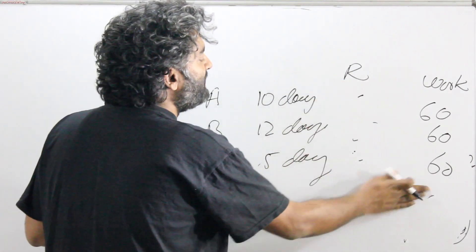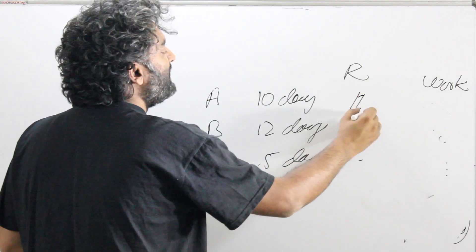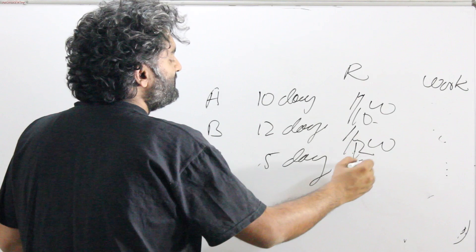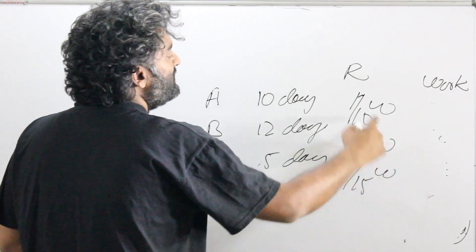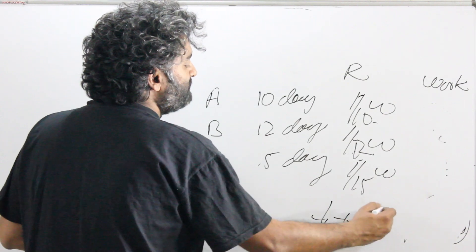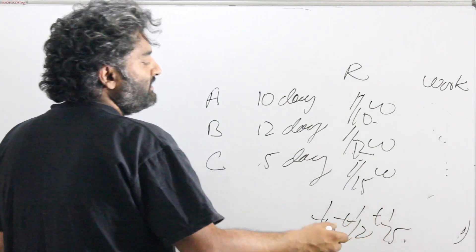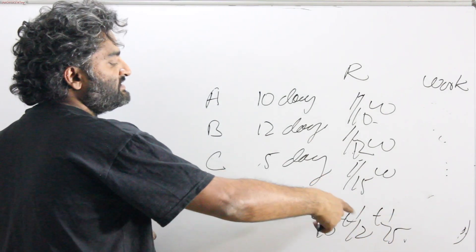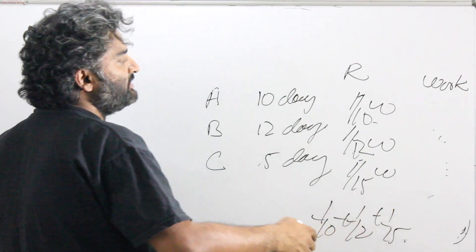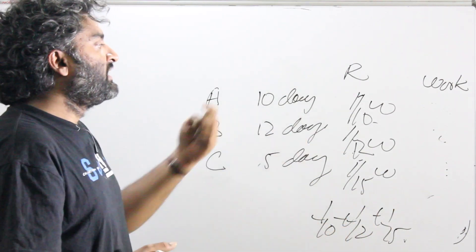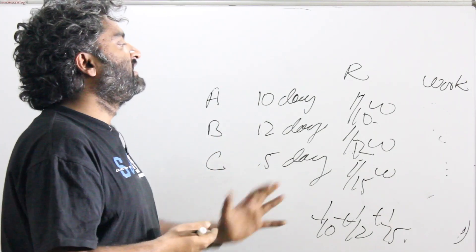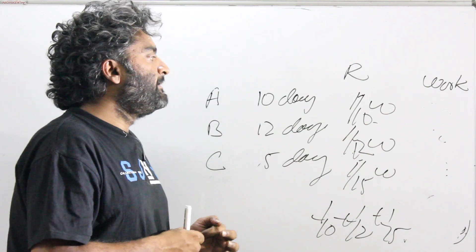If you were doing it by fractions, this would be 1 by 10 of work, 1 by 12 of work, and 1 by 15 of work. Combined rate would have been 1 by 10 plus 1 by 12 plus 1 by 15. LCM in the denominator, and all these terms get added up in the numerator. Pretty much the same thing. I would prefer the LCM method more often than not, because it makes life fairly easy, and the calculations become straightforward.